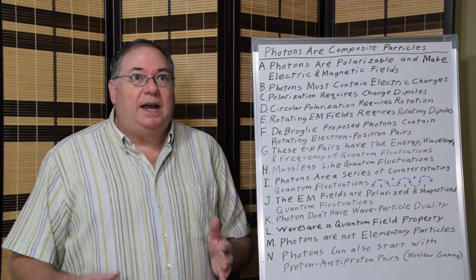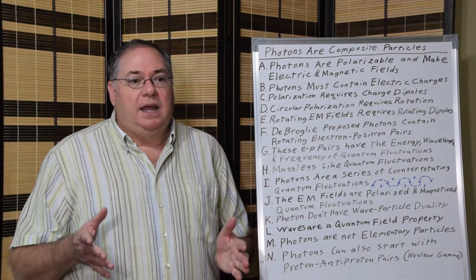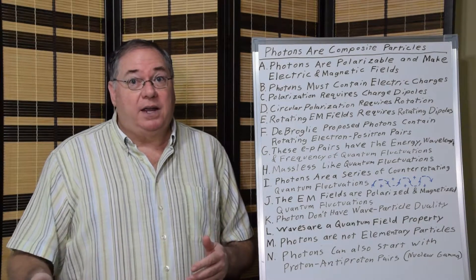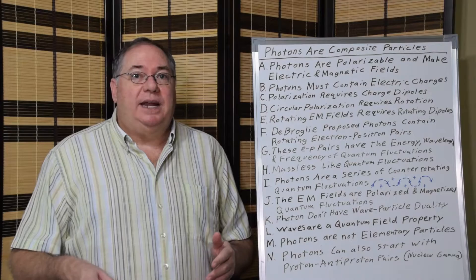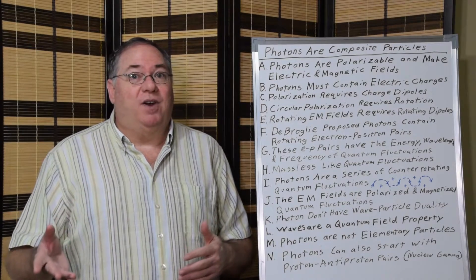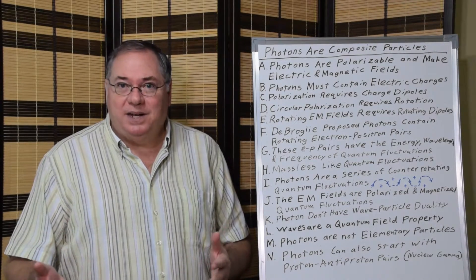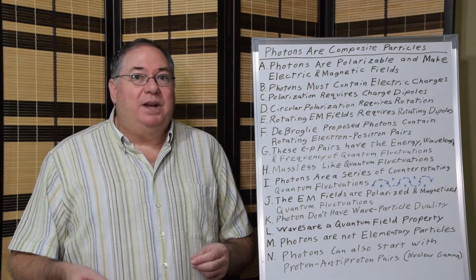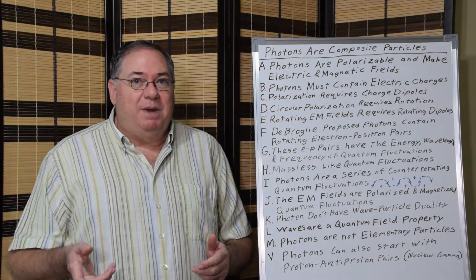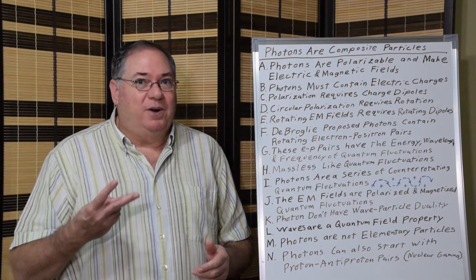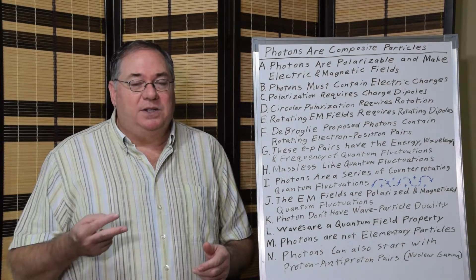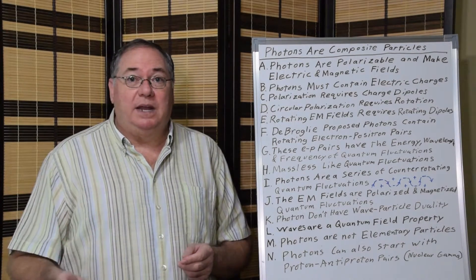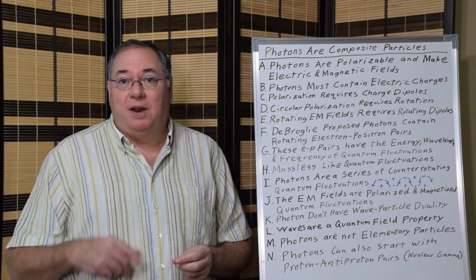And what he realized initially was that the Schrödinger equation was non-relativistic while the Dirac equation was. So he said, well, I have to describe photons using the Dirac equation because they're moving at the speed of light. And then he realized that using the Dirac equation meant that he had to have two particles, because it couldn't just be a single fermion. So he came up with the electron-positron model of a photon.